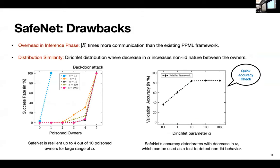But I'd also like to bring forth the drawbacks that is there for our framework. First is there is an overhead in inference phase. Naturally, now that you have an ensemble instead of a single model, you are likely to have more communication in the inference phase. Secondly is distribution similarity that the data owners, what if the distribution among the data owners is non-IID? So we try to create non-identical behavior among the data owners. And what we observe is that SafeNet actually tends to work for a large range of alpha values here. But it tends to break down when the non-IID behavior is at its extreme.